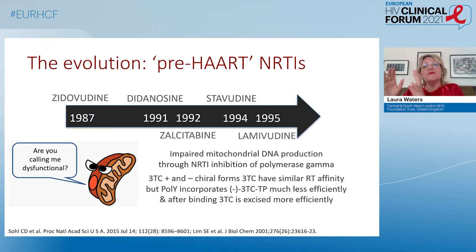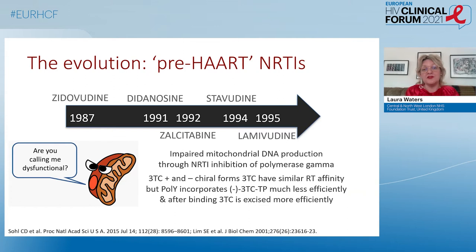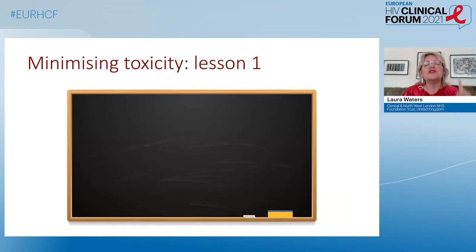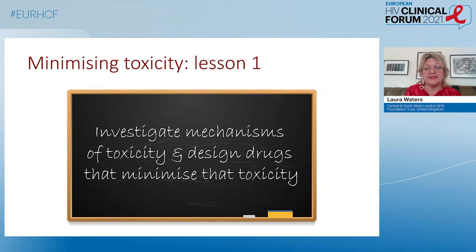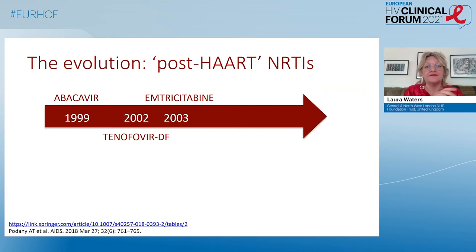We understand the mechanism, which is why it's important that lamivudine — which also, strictly speaking, is a pre-HAART NRTI — was developed with low affinity for polymerase gamma and high affinity for reverse transcriptase, and if it did bind, it was excised very quickly. So lamivudine, as we know, is a drug we still use widely today and is not associated with major mitochondrial toxicity. Lesson one: it's important to investigate the mechanisms of key toxicities and design drugs in the future that minimise that risk.